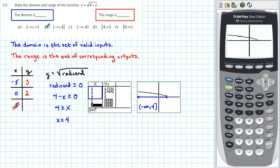So the correct answer for the domain is b, the interval from minus infinity to 4. Well, what about the range? Well, the range is the set of corresponding outputs. In our table, we see that the smallest corresponding output is 0, and the remaining outputs are non-negative.